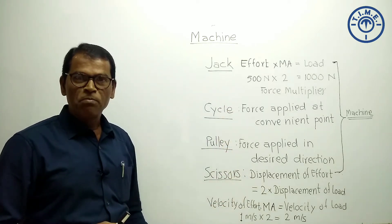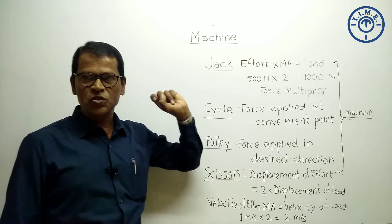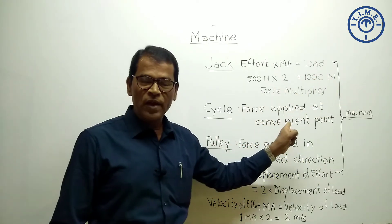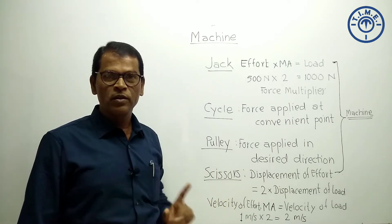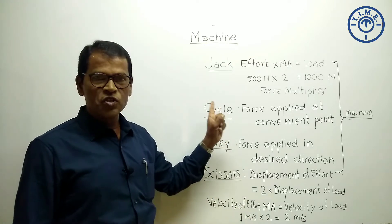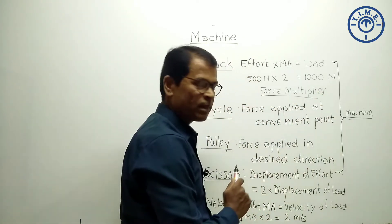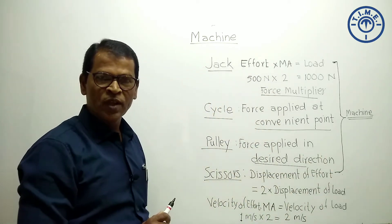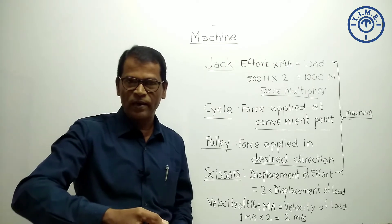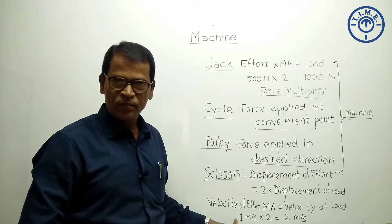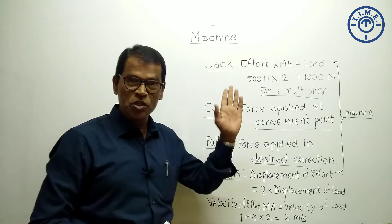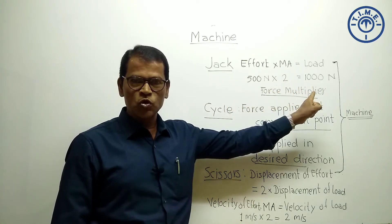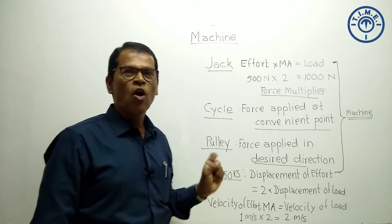So these four — jack, cycle, pulley, and scissor — are machines. How is a machine defined? Machine is a device which is used to overcome a large resistive force at a convenient point in the desired direction, or as a speed multiplier. So a machine works as a force multiplier, helps us apply force in a convenient direction, helps us apply force in the desired direction, or works as a speed multiplier.